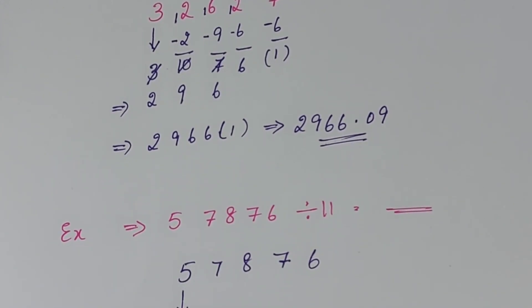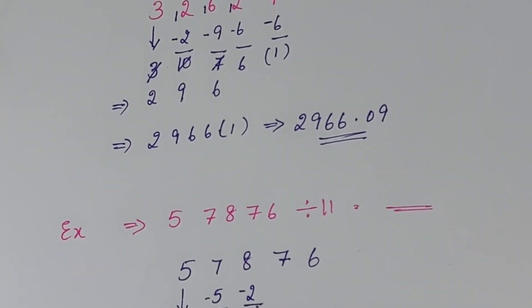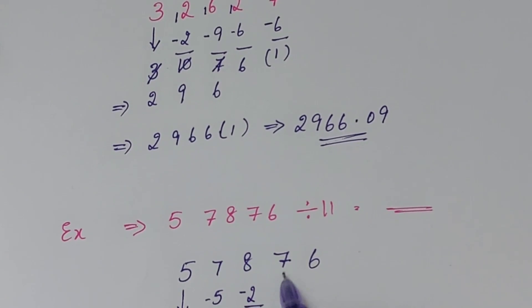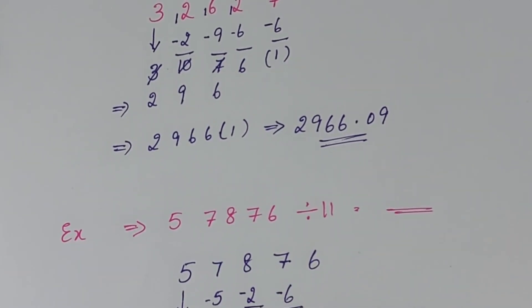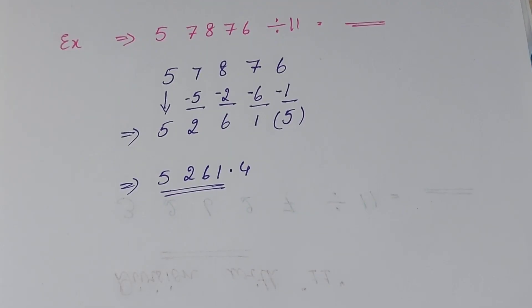Drag 5 as it is. So 7 minus 5 we can do. So I am keeping 5 here. So the answer is 2. And now 8 minus 2 also we can do, which is 6. And now 7 minus 6 also we can do, which is 1. And 6 minus 1 also we can do, which is 5.